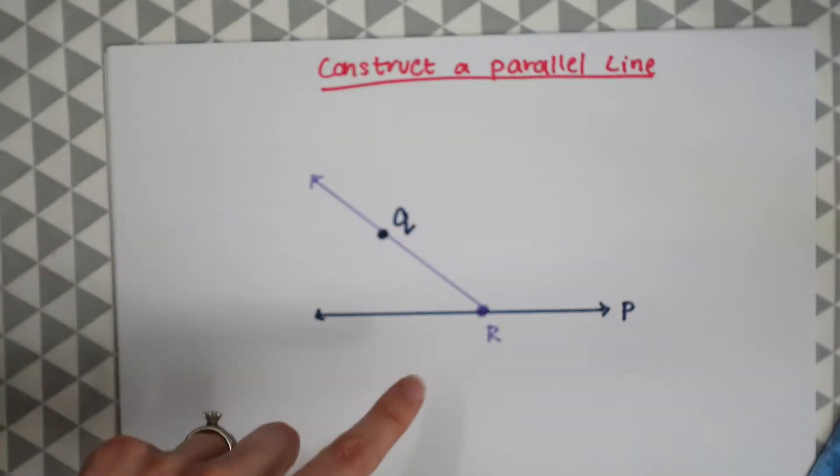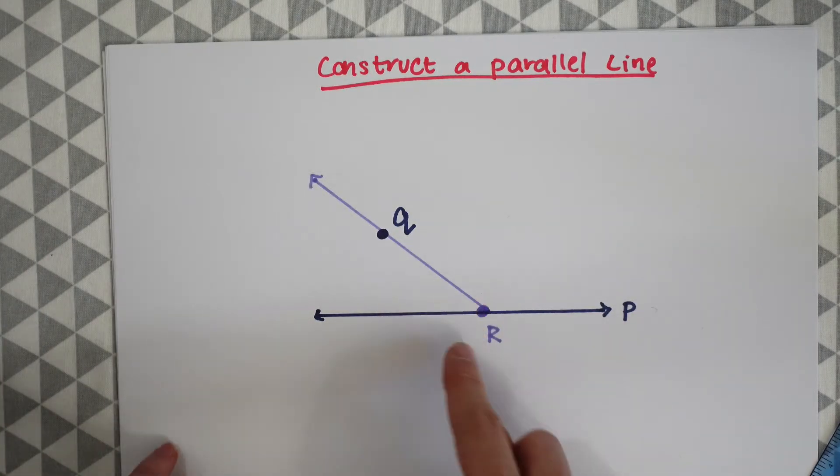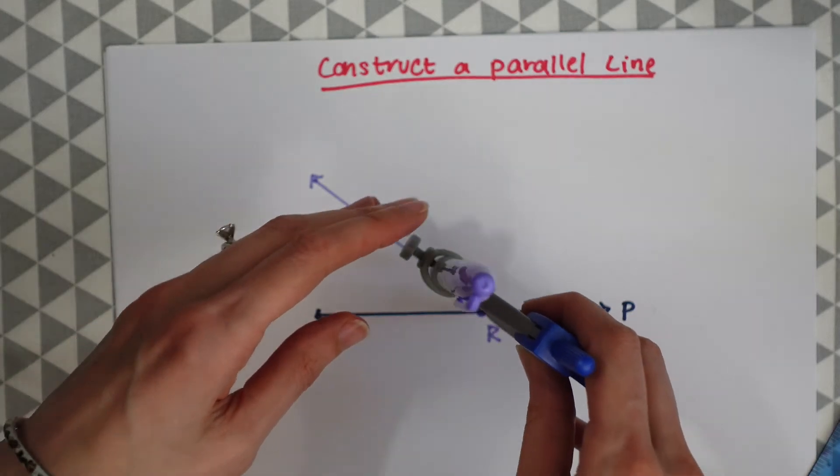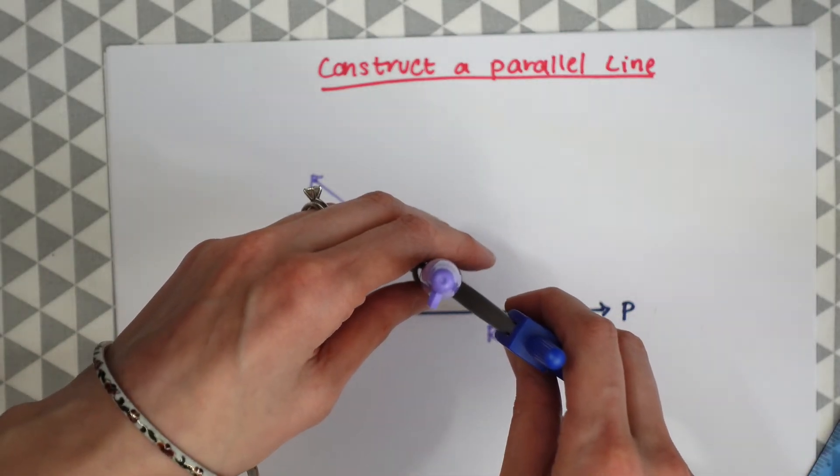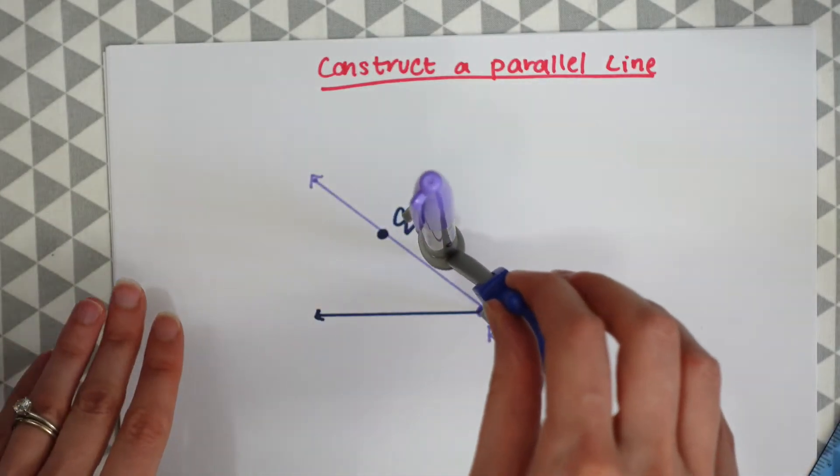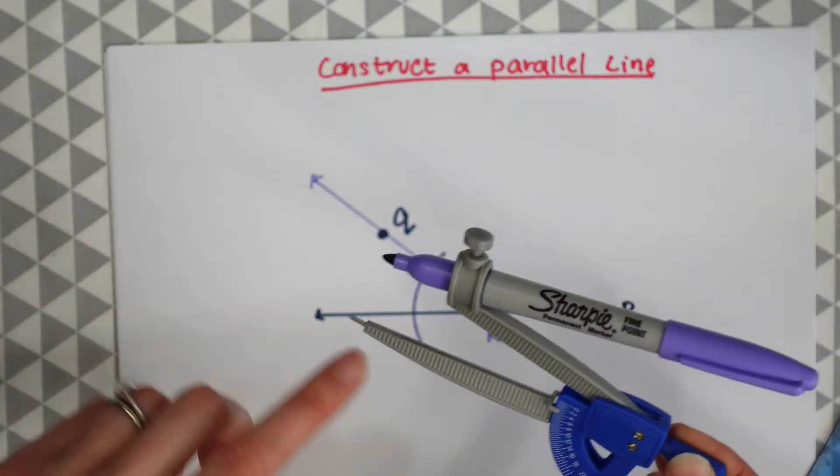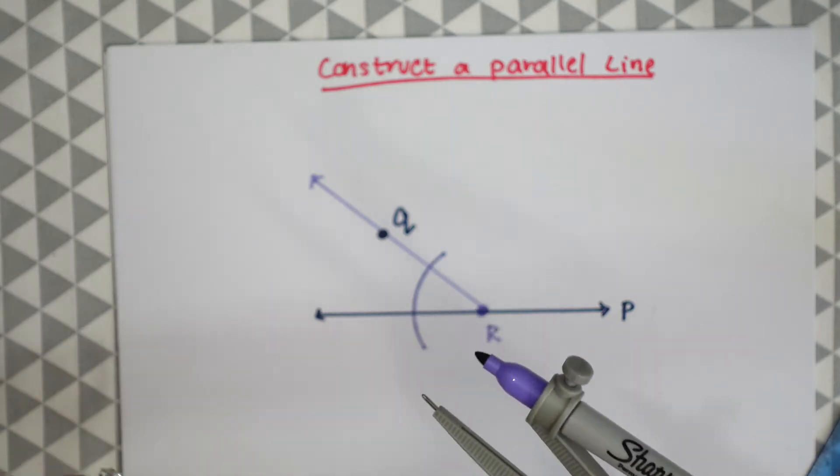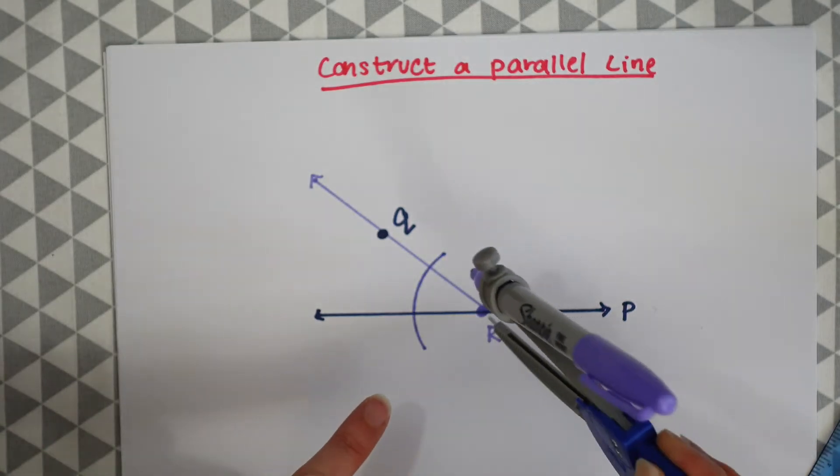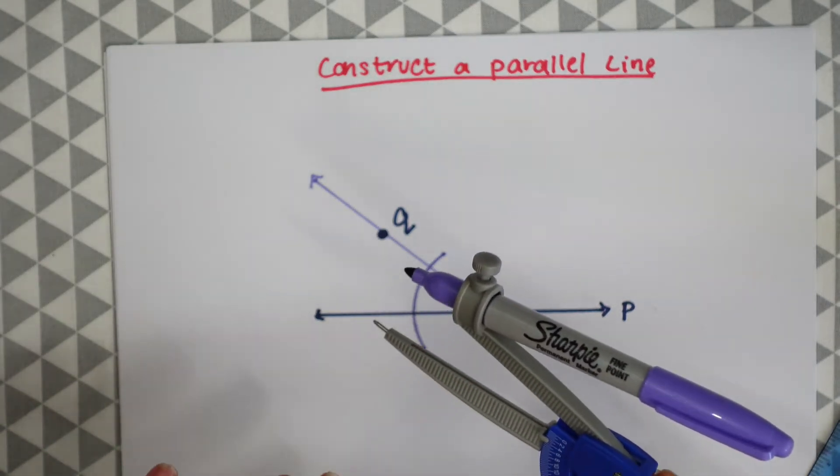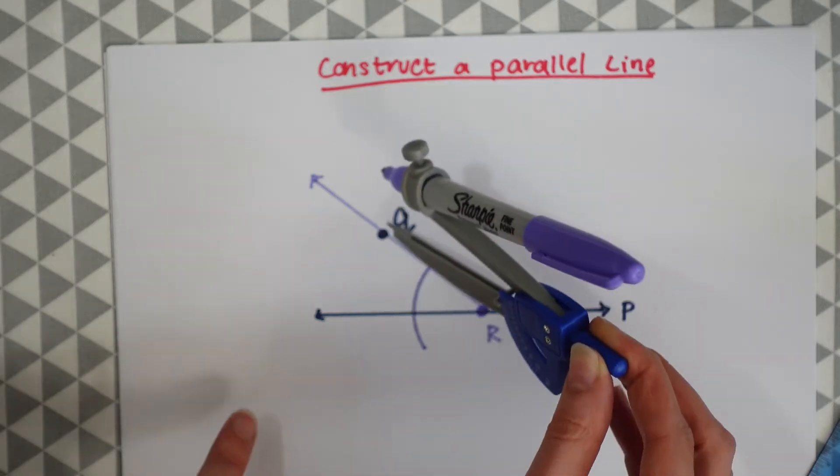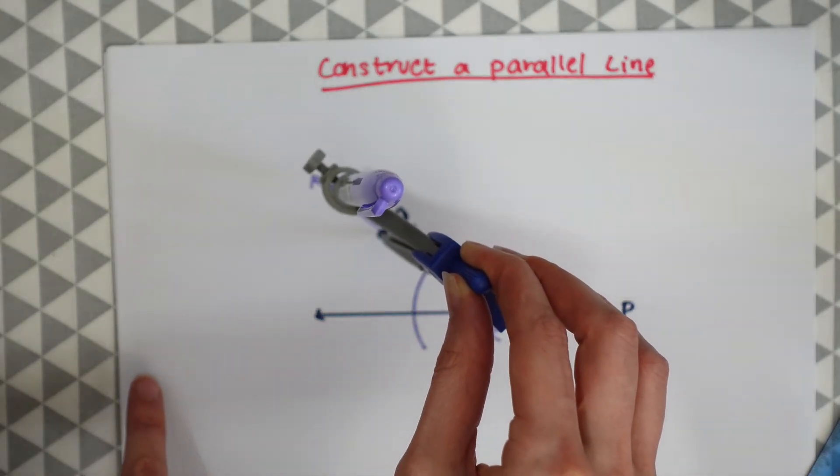Now that we have our two points connected, notice that this is going to make a little angle here. To measure that we're just going to draw a little arc and this could be any size on your compass. Whatever size you choose to draw an arc, be sure to keep that size and now we're going to draw an arc the same size and bring the point to point Q.